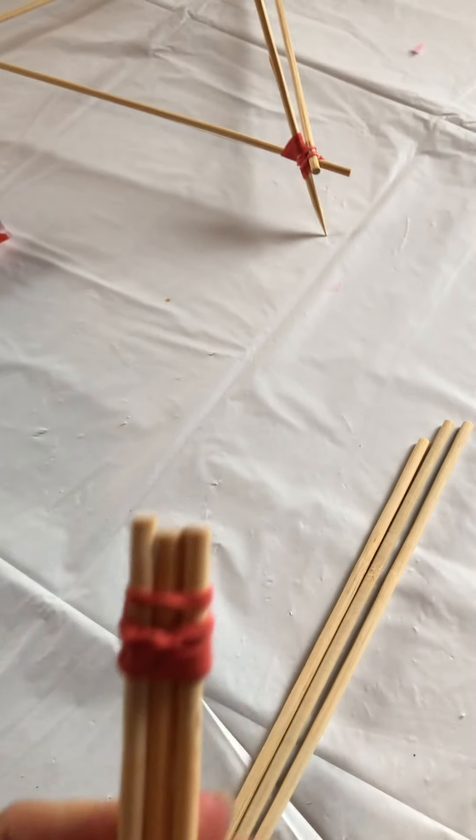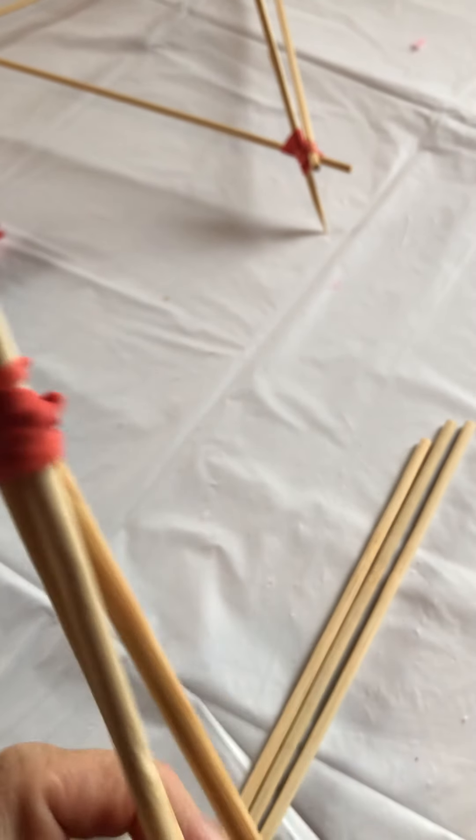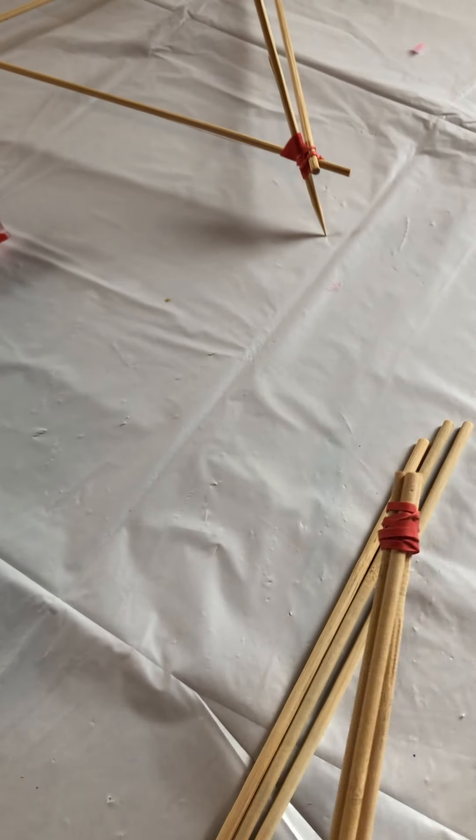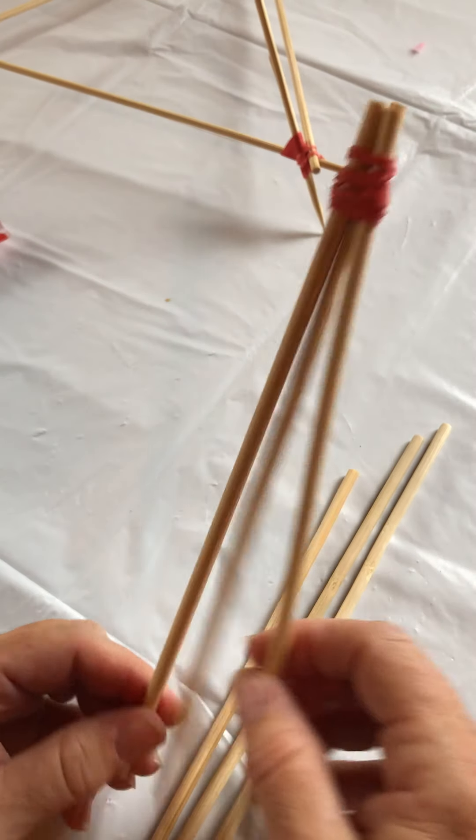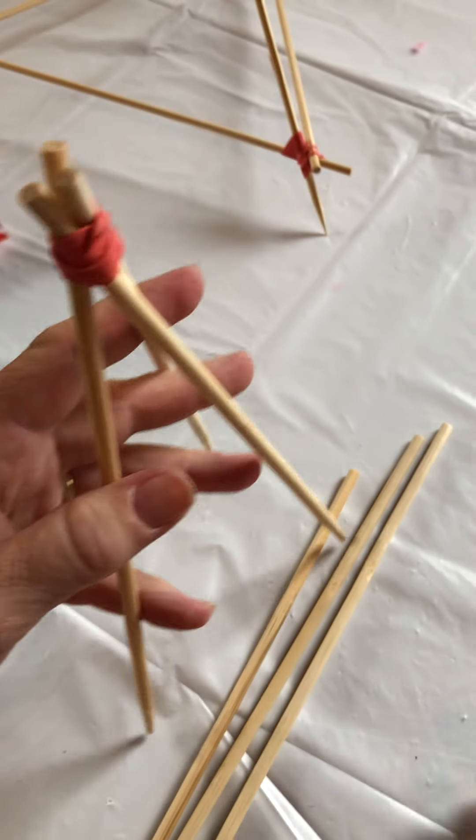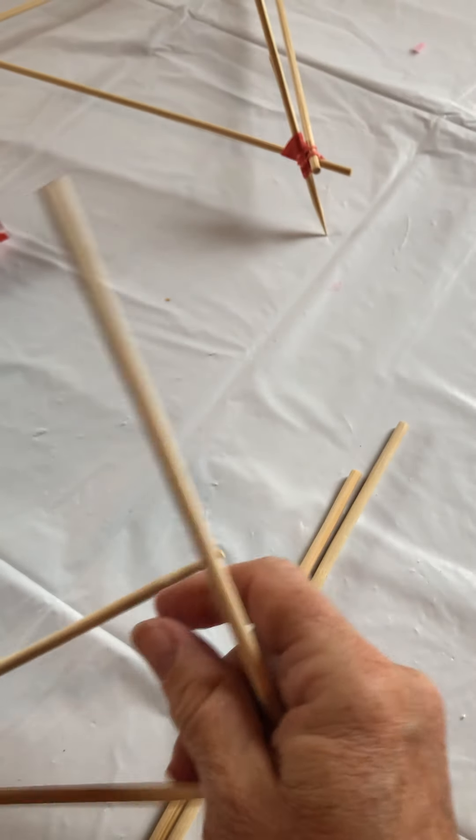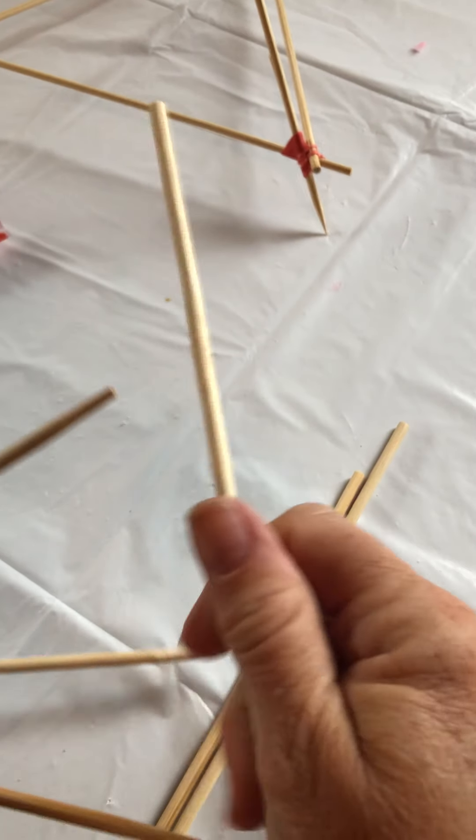Maybe leave about a half an inch up at the top. Keep thinking threes and keep thinking triangles because really what you're going to do right now is with each chopstick, you're going to be building another triangle. Let's take these two and build a triangle with this next chopstick.